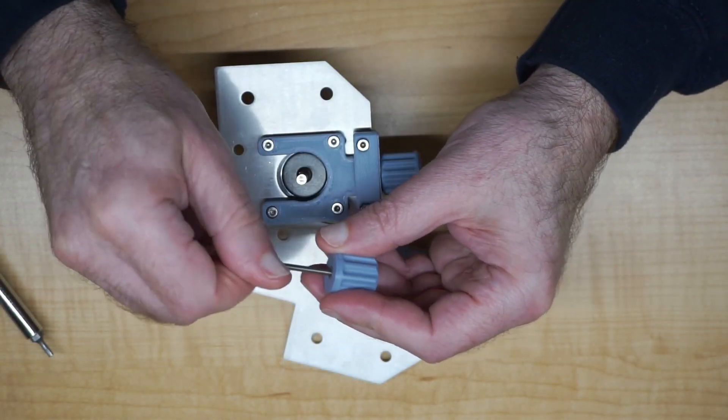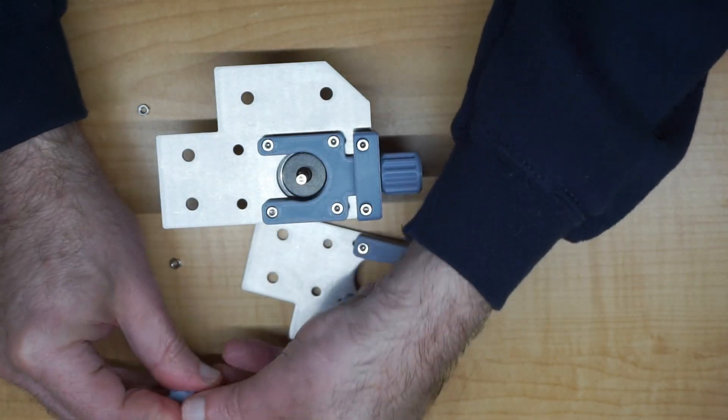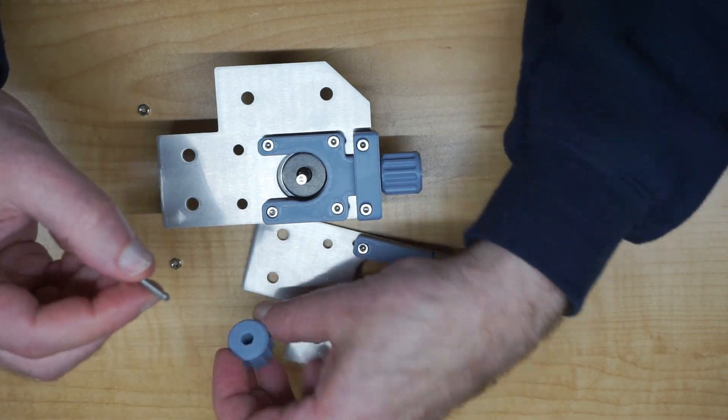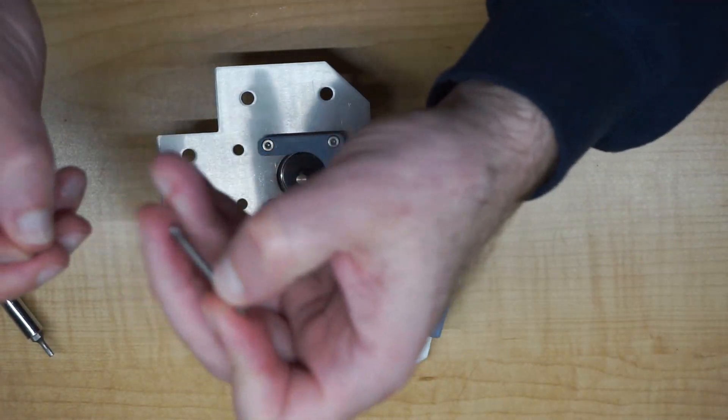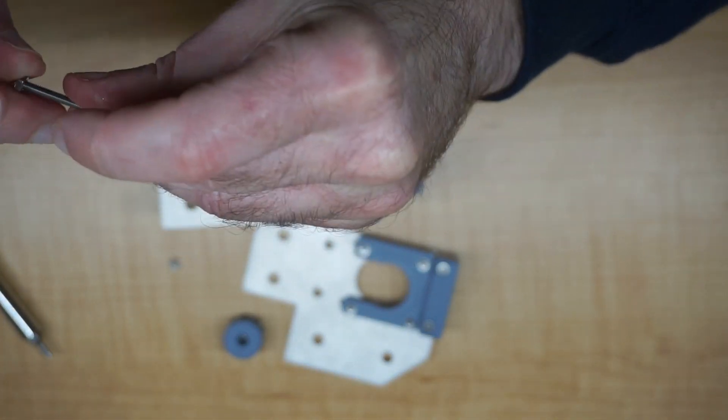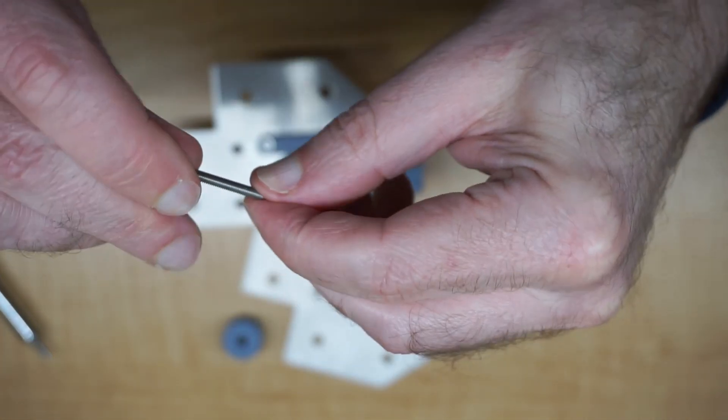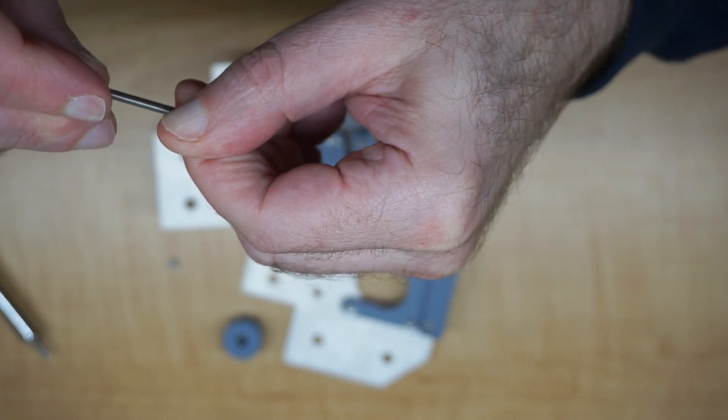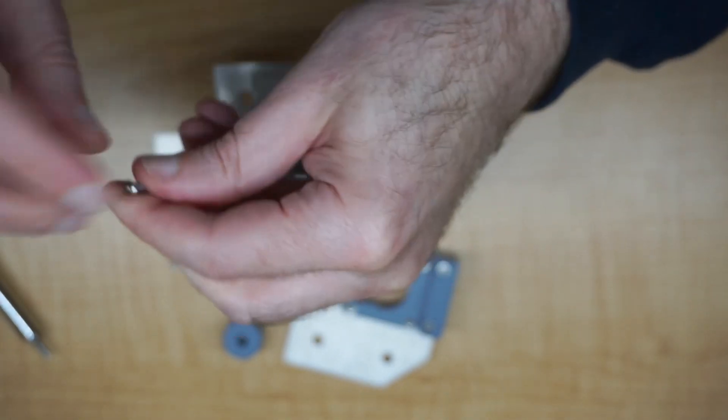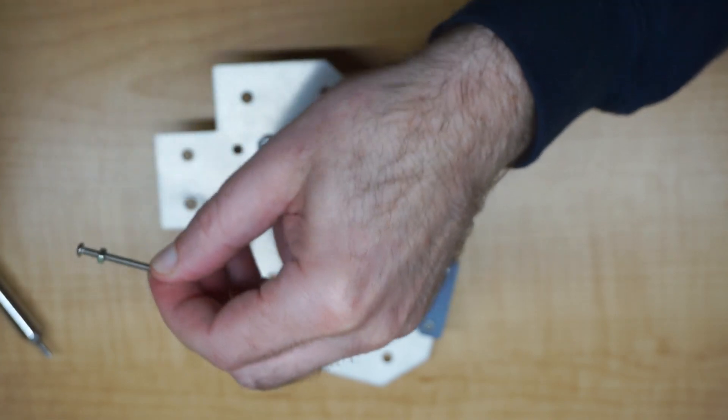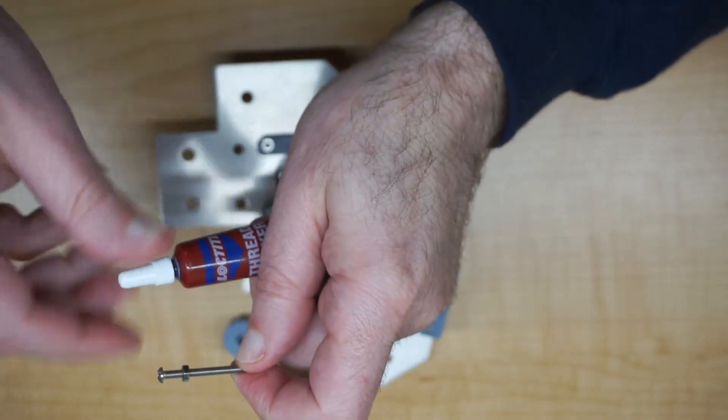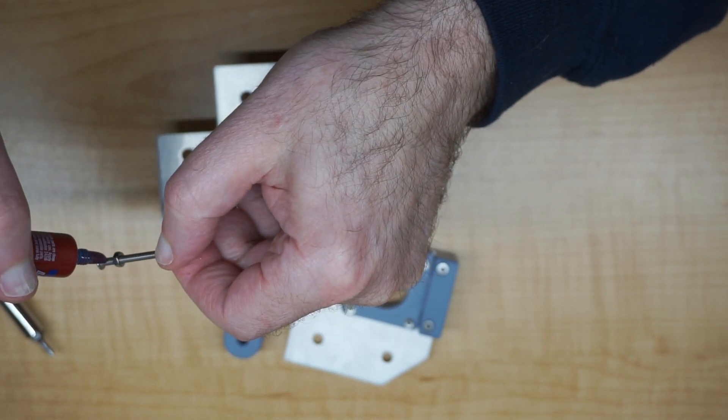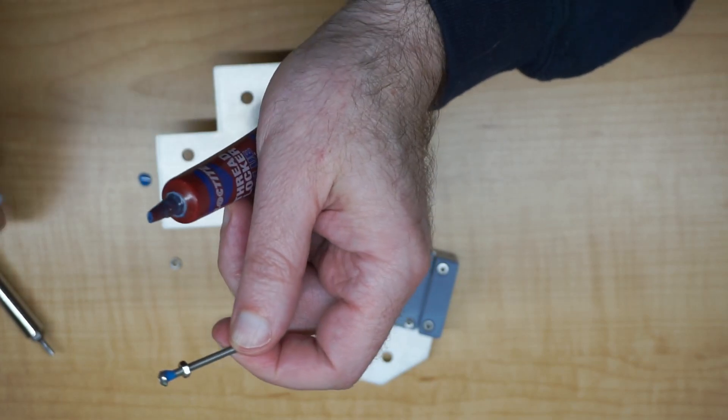With the bolt, what I'm doing is putting a nut on the screw here and you're gonna thread it all the way down just until it stops. Get yourself a little Loctite, just a little dab.